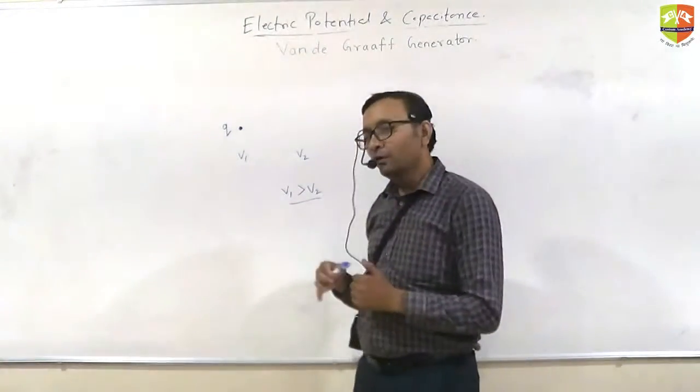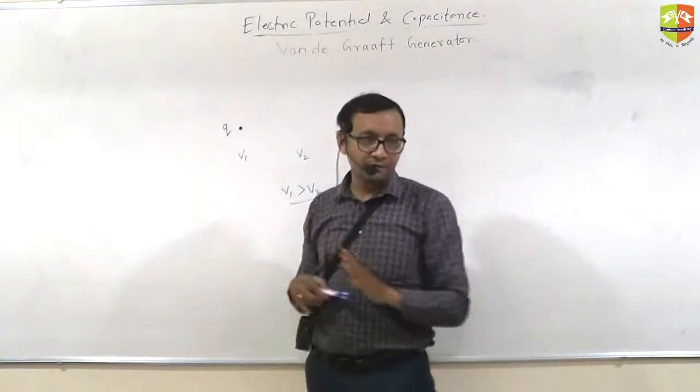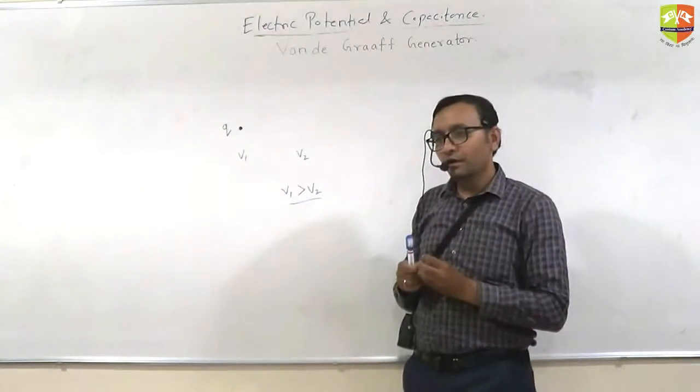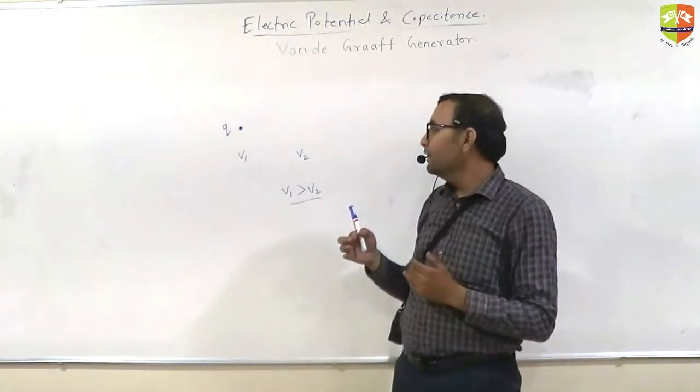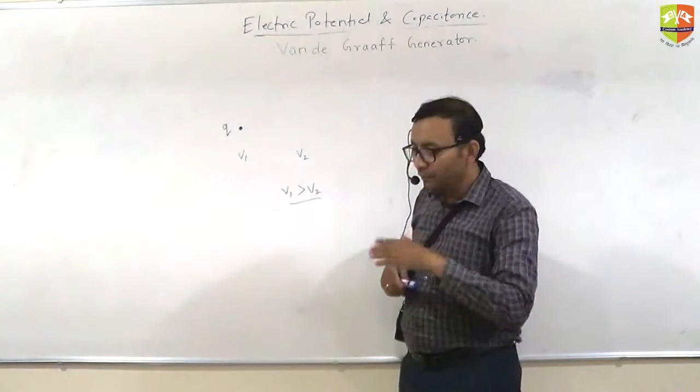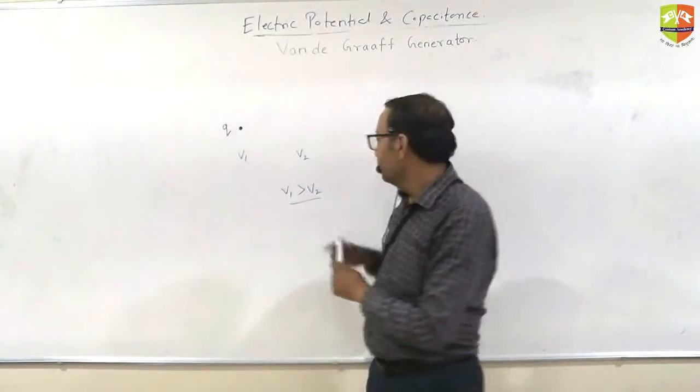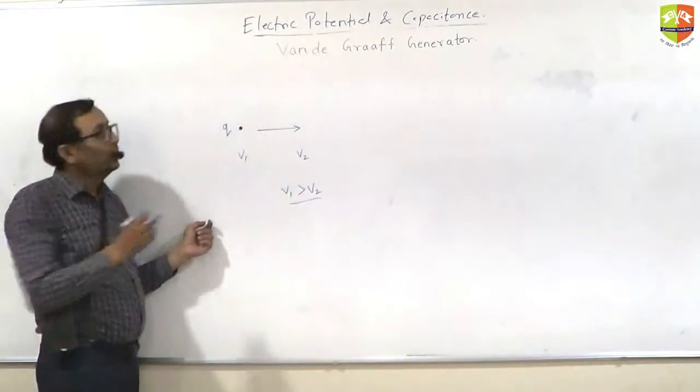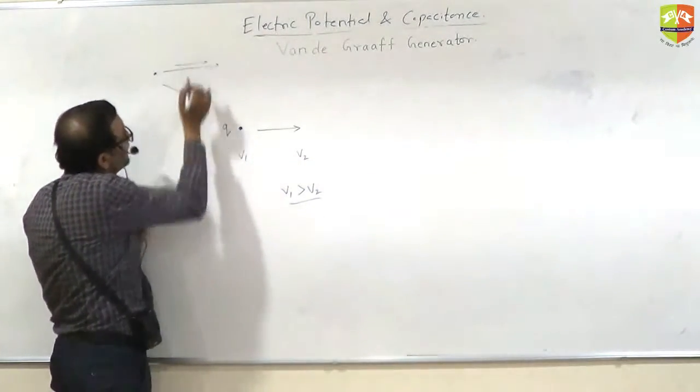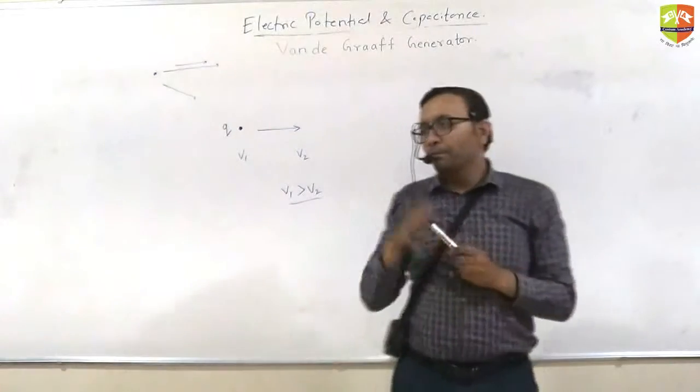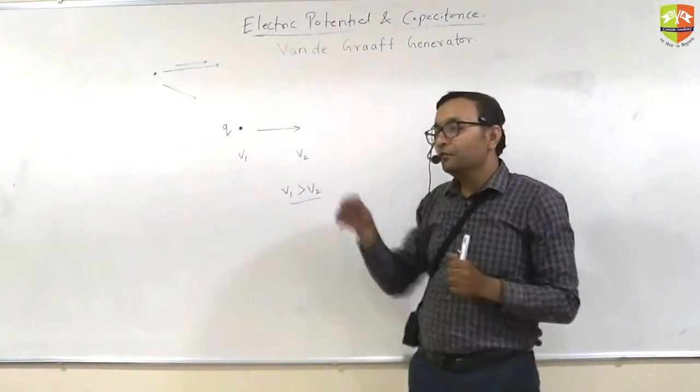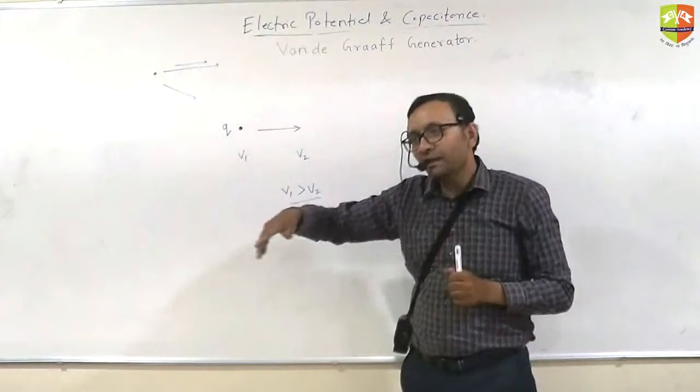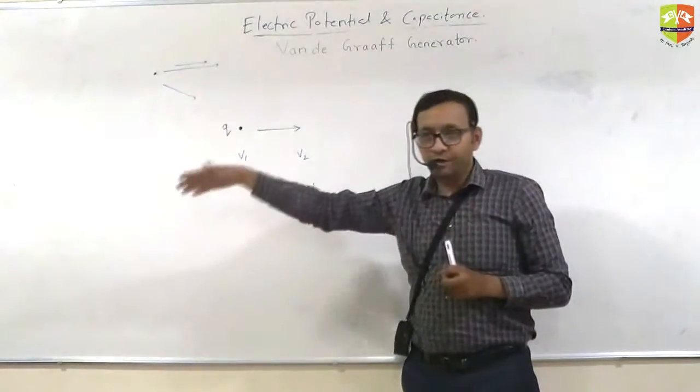You already know that positive charge will move in the direction of electric field. So you can understand the same concept by using potential also. It is saying the same thing. Electric field will be in opposite direction of increasing potential. So basically if V1 is more than V2, electric field will be like this. Yes or no? Assume a point charge over here, its electric field will be like that and along this direction potential decreases. So direction of electric field will be in the direction of decreasing potential. When you say that a charge will move in the direction of electric field, you are also saying that the charge will move from higher potential to lower potential.